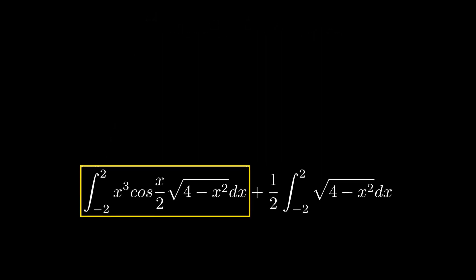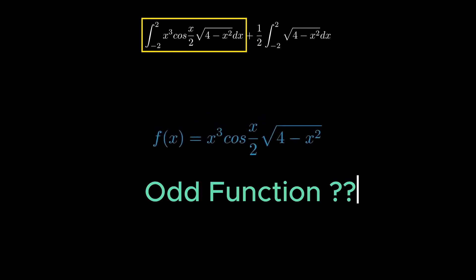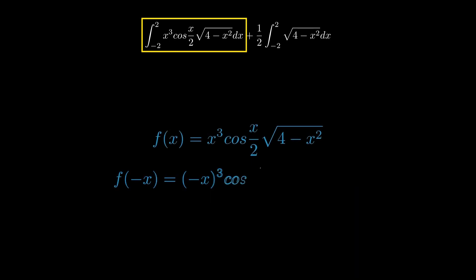Now, take a closer look at the function in the first part of the integral. It's an odd function. What does that mean exactly? Well, for any value of x, if we replace it with its negative counterpart, the function returns the negative of the original function. Any function that holds this property is an odd function.